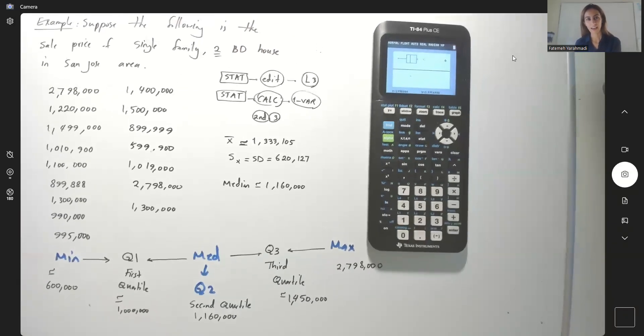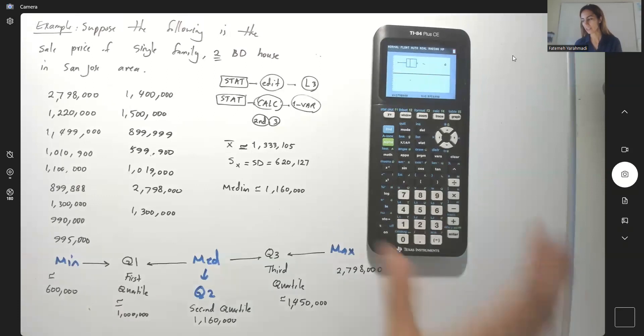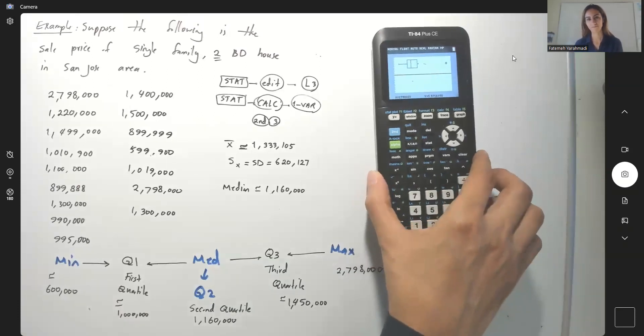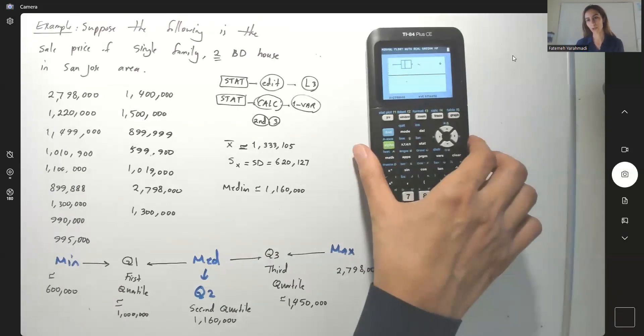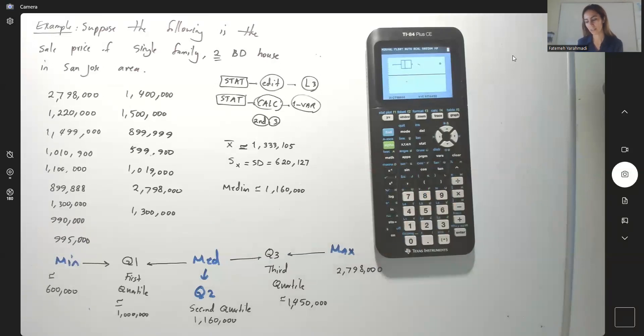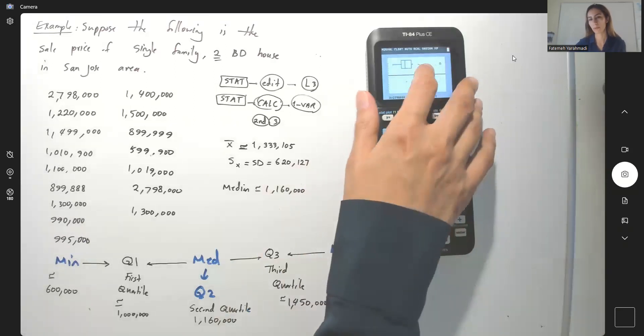So far we learned how to use a calculator and graph a box plot, and in this question we have the following information about the housing prices in San Jose Rio for a single-family two-bedroom house. But how do we find the outlier without using a box plot?